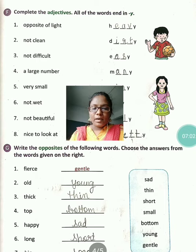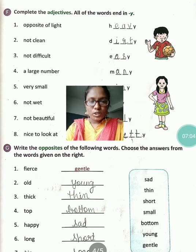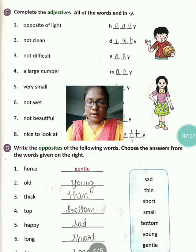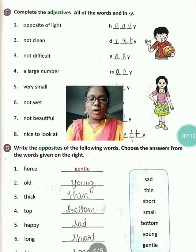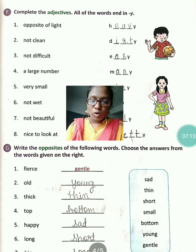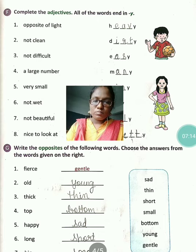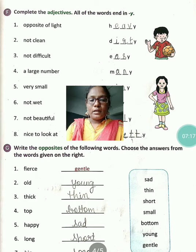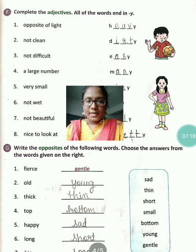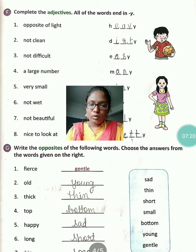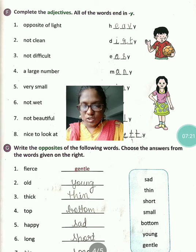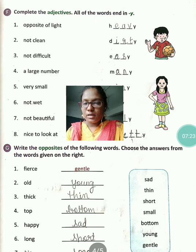Yeh aapke opposites hain, options diye hue hain, aapko just fill karna hai. Old ka opposite young hota hai. Top ka kya hoga? Bottom. Happy — sad. Long — short. Big — small. Yeh sab aapne first standard mein padha hi hai. Opposites — yeh bahut easy chapter hai. Learn this thoroughly.